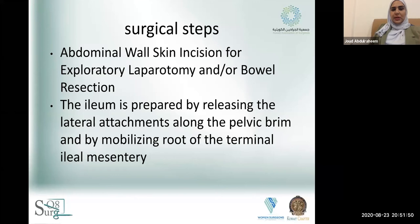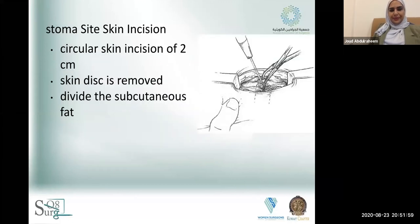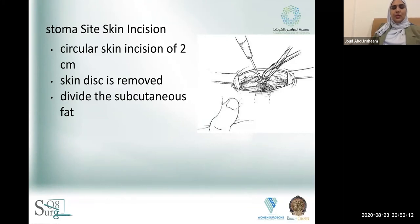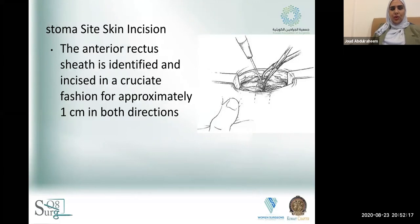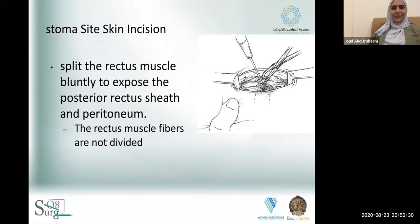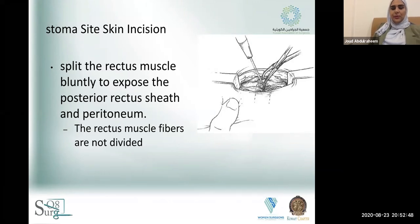After mobilizing the ileum to make it tension free, the key step is the stoma site skin incision. Start with a circular skin incision of two centimeters — it must be two centimeters so it won't be tight over the stoma. Divide the subcutaneous fat to visualize the anterior rectus sheath. Then split the rectus muscle bluntly — you split, don't cut — to expose the posterior rectus sheath and peritoneum. The rectus muscle is not divided, in order to preserve its function around the stoma and prevent parastomal hernia.